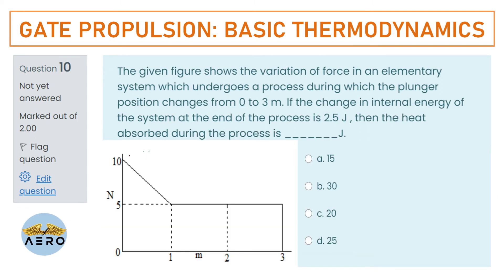The given figure shows the variation of force in an elementary system which undergoes a process during which the plunger position changes from 0 to 3 meters. If the change in internal energy of the system at the end of the process is 2.5 J, find the heat absorbed during the process.